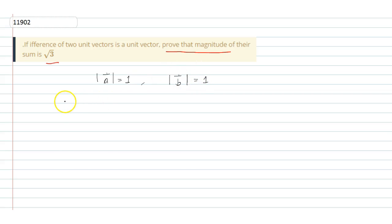Now, what we are given is the difference of two vectors. The magnitude of A vector minus B vector is also equal to 1.